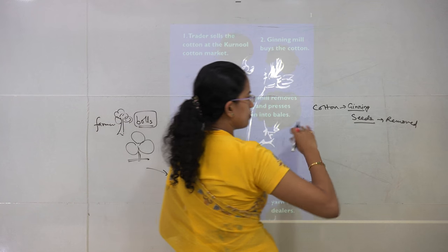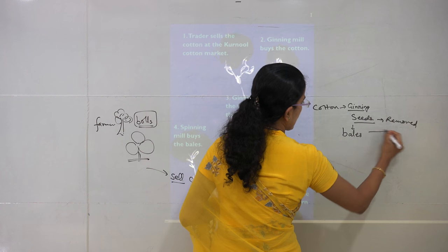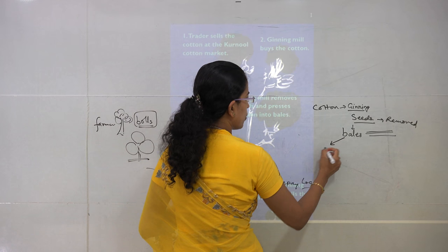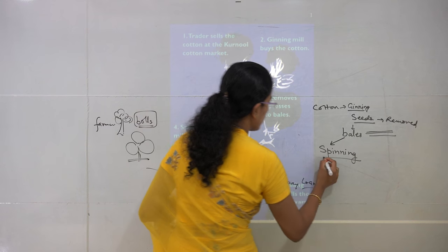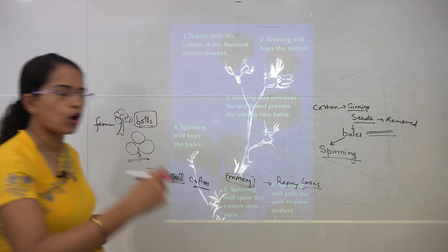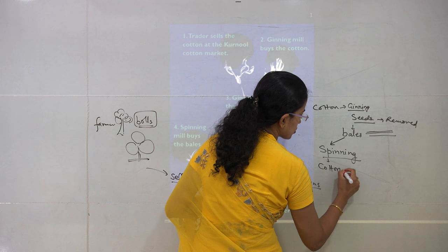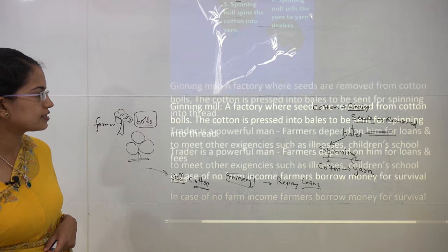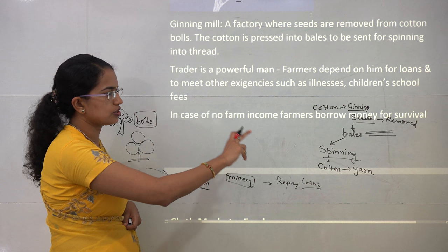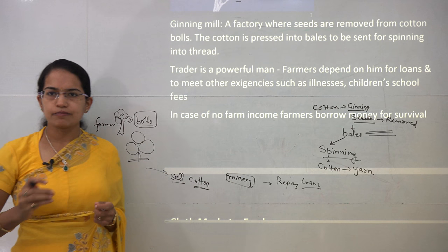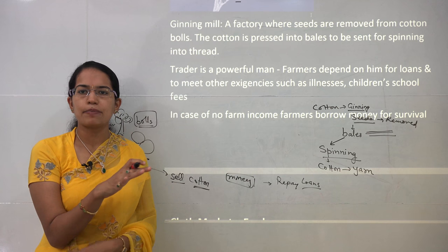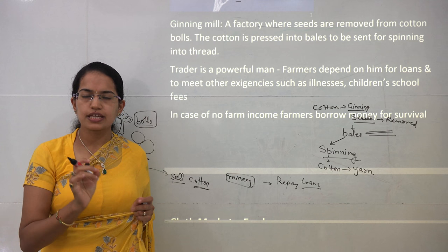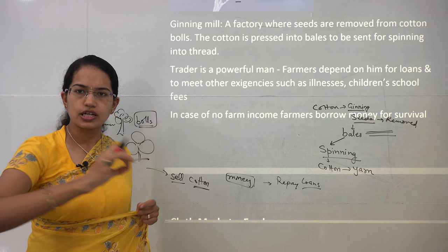Once the seeds are removed, the cotton is converted into bales — flat, compressed layers of cotton. These bales go to the spinning mill. At the spinning mill, the cotton is spun into yarn, and this yarn is sold to yarn dealers. So the process goes: cotton to ginning mill, where seeds are removed and cotton is compressed into bales; then bales go to the spinning mill where they are converted into yarn or thread.